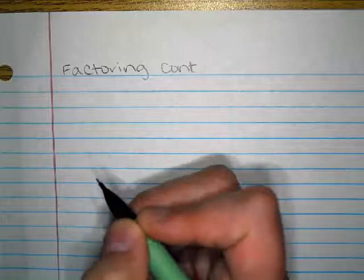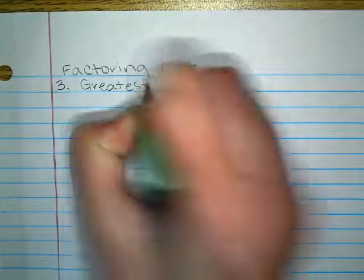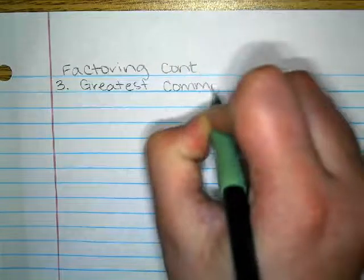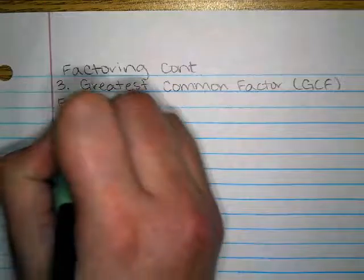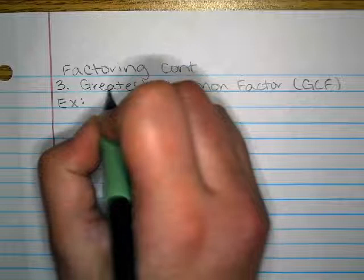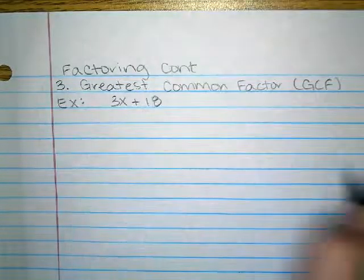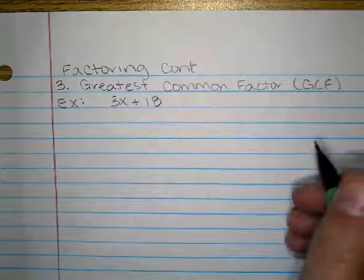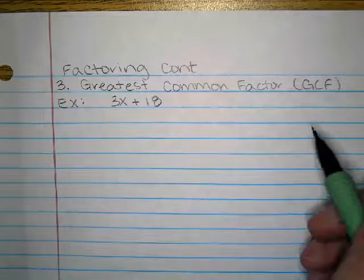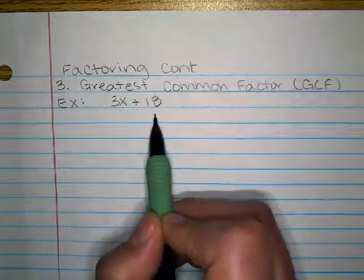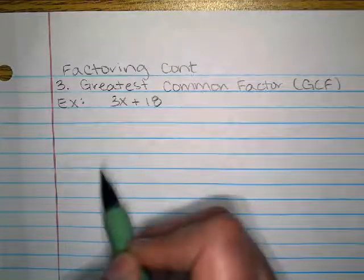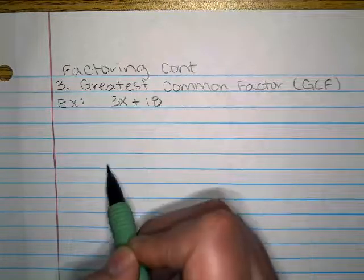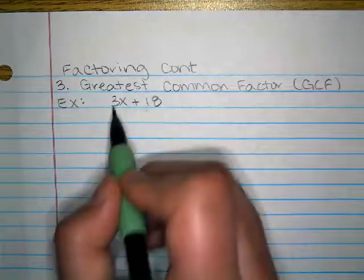We have two more types of factoring to review today. The first type we're going to review — which is actually the third in our overall review — is the greatest common factor, which we often call GCF. The examples we're going to do are just going to be the GCF with some binomials. Greatest common factor as a factoring method can appear in binomials and trinomials and all sorts of different types of problems, but for today we're just going to look at GCF, and that's it.